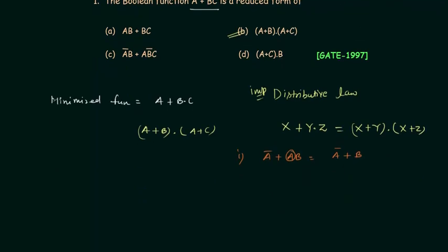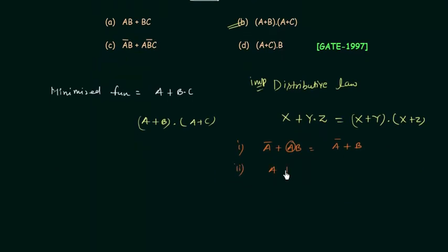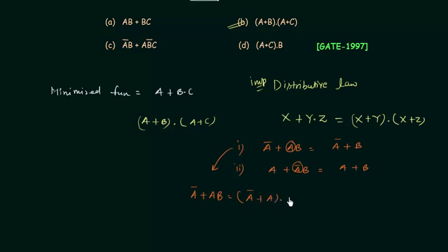The second shortcut is: a OR (a complement AND b) can be written as a OR b, by neglecting a complement. If you use the distributive law you can easily prove these. For example, proving the first shortcut: a complement OR (a AND b) expands to (a complement OR a) AND (a complement OR b). Since a complement OR a equals 1, we get 1 AND (a complement OR b), which equals a complement OR b. These shortcuts are very handy in exams, so please note them.